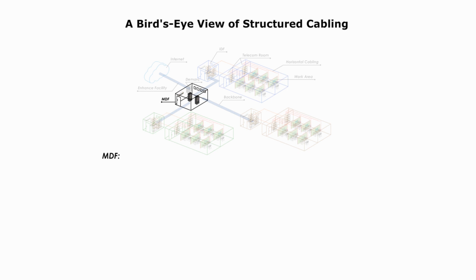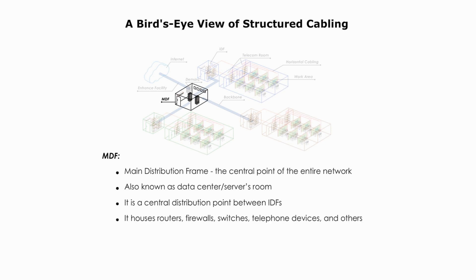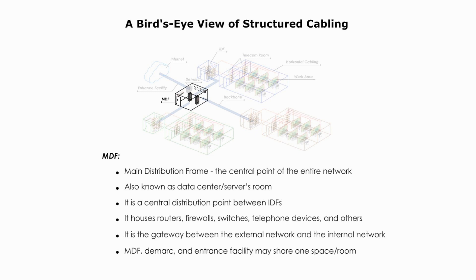MDF stands for main distribution frame, the central point of the entire network. Also known as a data center or service room, it is a central distribution point between IDFs. It houses routers, firewalls, switches, telephone devices, and many others. It's the gateway between the external network and the internal network. MDF, DMARC, and entrance facility may share one space or room.